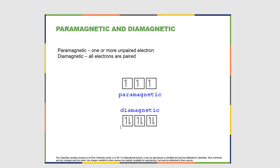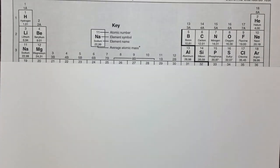I want to discuss two concepts: paramagnetic and diamagnetic. Paramagnetic means one or more unpaired electrons; diamagnetic means all electrons are paired. Orbitals only have all paired electrons when they're completely full. Now let's switch over and go through several examples, starting with hydrogen and building up to neon.